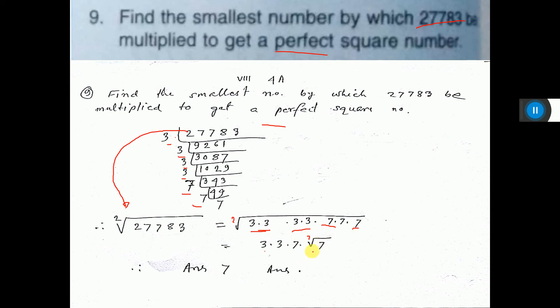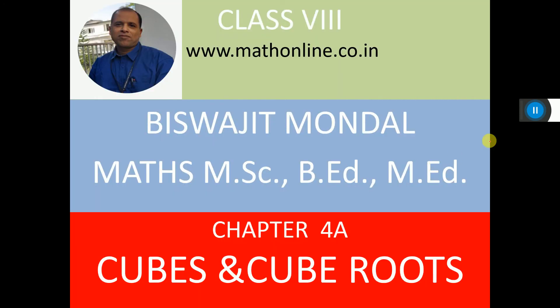So the answer will be if you multiply by 7 then the number will be a perfect square number. So answer is 7. That's all.